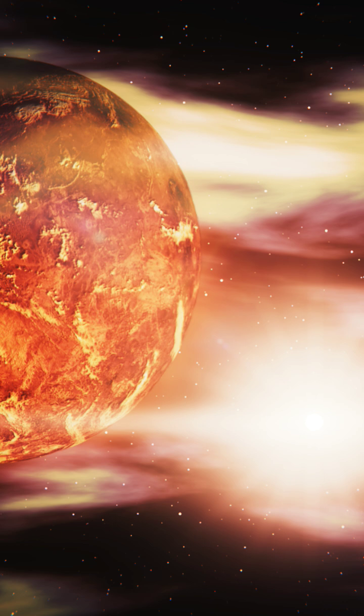2. Venus is the second brightest natural object in the night sky after the Moon. The clouds of sulfuric acid in Venus' atmosphere make it reflective and shiny and obscure our view of its surface.